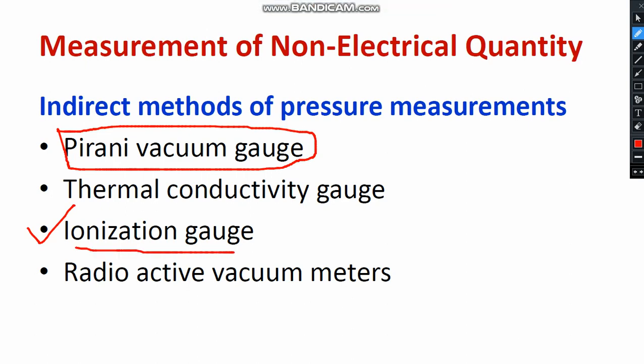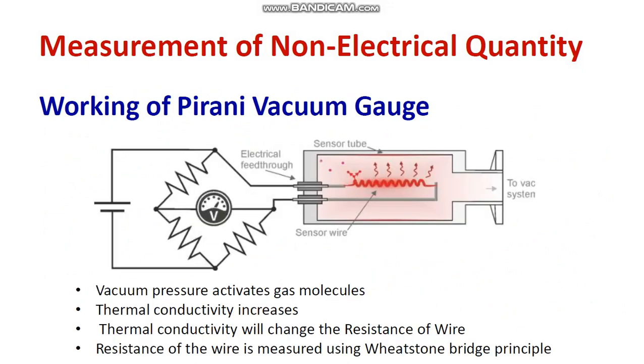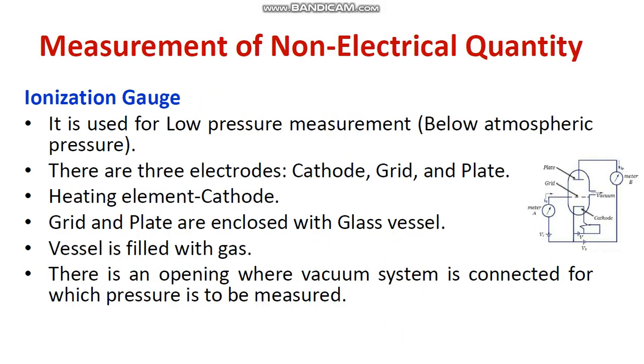Let's understand what we mean by ionization gauge. First, we will discuss the basics of ionization gauge and why it is required. The ionization gauge is mainly used for measuring low pressure — below atmospheric pressure. You can refer to any textbook for the exact pressure range. For now, understand that it is mainly used for measurement of low pressure and is suitable for below atmospheric pressure.